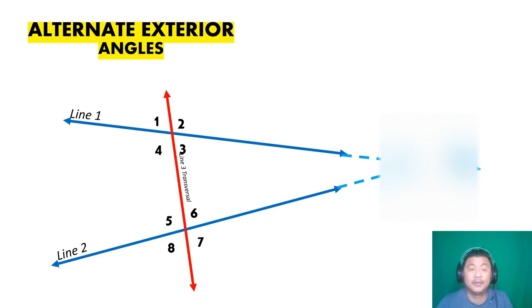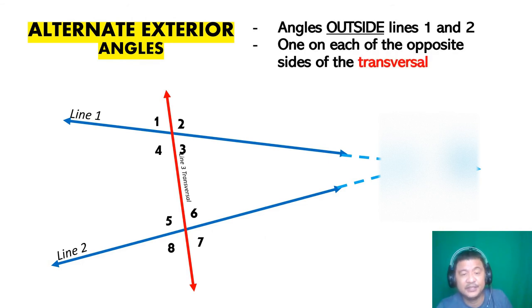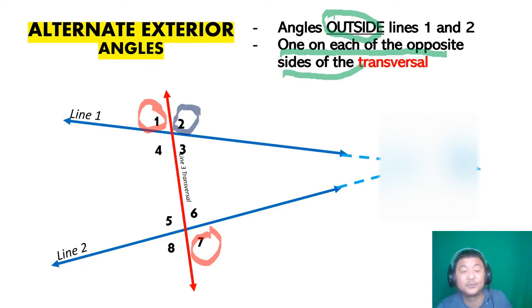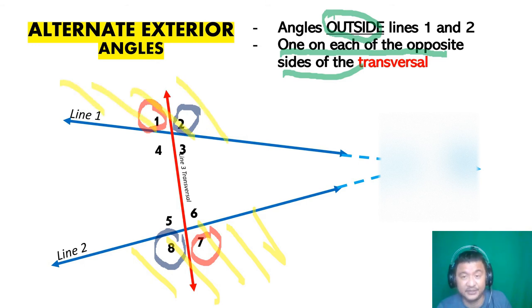Alternate exterior angles: they should be outside, and one on each of the opposite sides of the transversal. The partner of angle one — don't choose eight, don't choose two — you choose angle seven. The partner of angle two is angle eight. Both pairs are exterior and alternate. Those are our answers.